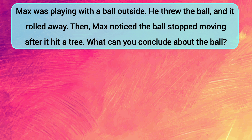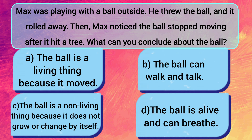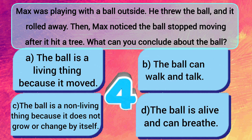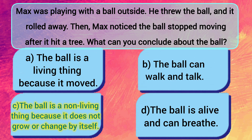Max was playing with a ball outside. He threw the ball and it rolled away, then noticed the ball stopped moving after it hit a tree. What can you conclude about the ball? A: The ball is a living thing because it moved. B: The ball can walk and talk. C: The ball is a non-living thing because it does not grow or change by itself. D: The ball is alive and can breathe. The answer is C — the ball is a non-living thing because it does not grow or change by itself.